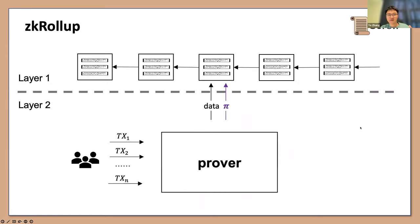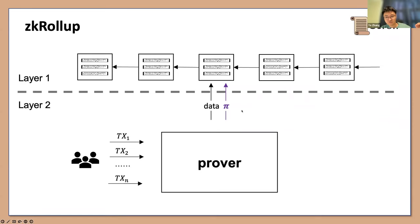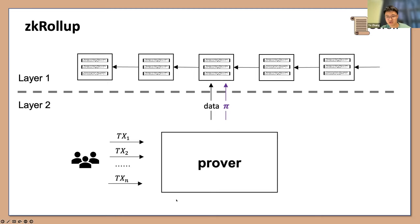The idea behind ZK-Rollup is that instead of broadcasting all transactions on the congested and expensive Layer 1 P2P network, you send all transactions to an off-chain and centralized Layer 2 node. This node processes all those transactions and generates a very small and succinct proof pi, saying that all those n transactions are valid. Then Layer 1 only needs to verify this very succinct proof instead of re-executing all transactions. The magic here happens with zero-knowledge proof, because it can compress a huge amount of computation — a batch of transactions — into a small, publicly verifiable proof.